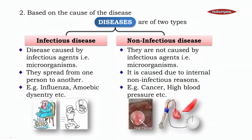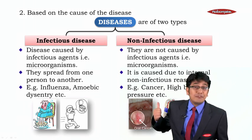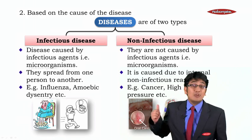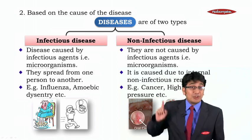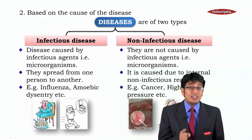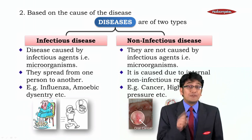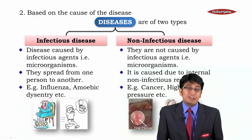Non-infectious diseases are caused due to internal, non-infectious reasons. For example, cancer and high blood pressure. Infectious disease examples include influenza and amoebic dysentery. Infectious diseases require infection to affect you and can spread from one body to another, but non-infectious diseases cannot spread because they originate from inside — they are not caused by bacteria or a virus. Cancer is a very dangerous non-infectious disease.